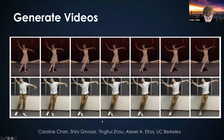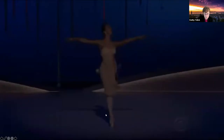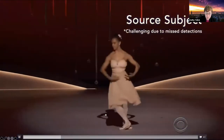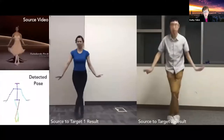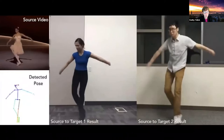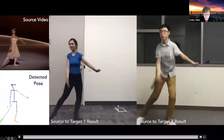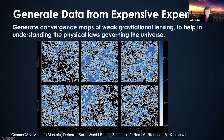This next example is looking at using generative adversarial neural nets to produce fake videos. There's our ballet dancer and two graduate students who don't know how to dance very well, but they're made to appear to know how to dance by superimposing their images on a model learned from an expert. Where does this come up in science? Similar techniques are being used to generate convergence maps of weak gravitational lensing — using them to try to understand physical laws.